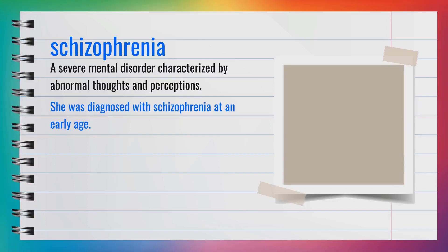The word schizophrenia, spelled S-C-H-I-Z-O-P-H-R-E-N-I-A, is a severe mental disorder characterized by abnormal thoughts and perceptions. For example, she was diagnosed with schizophrenia at an early age. It affects how a person thinks and behaves.